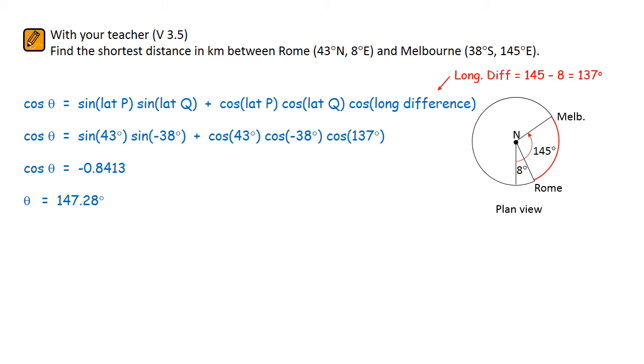To find the distance we use the arc formula. D equals 2πr times θ over 360 because we want to get the answer in kilometres. The answer equals 16,377 kilometres.